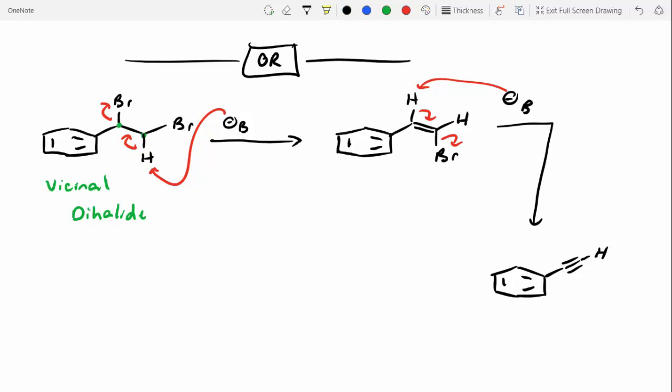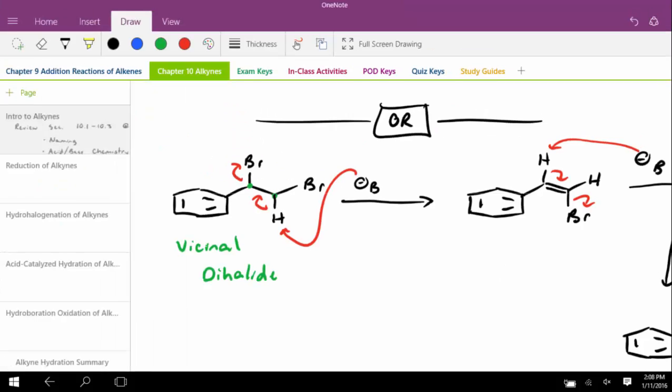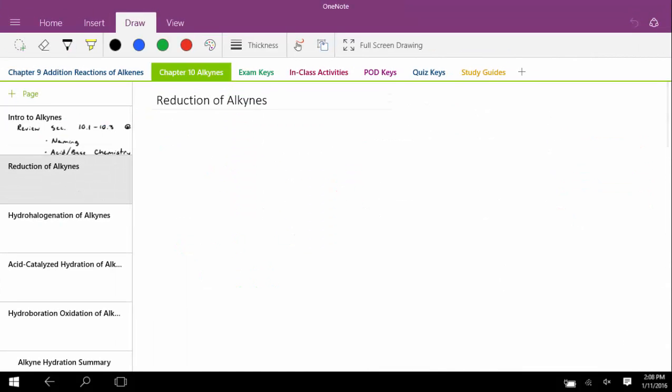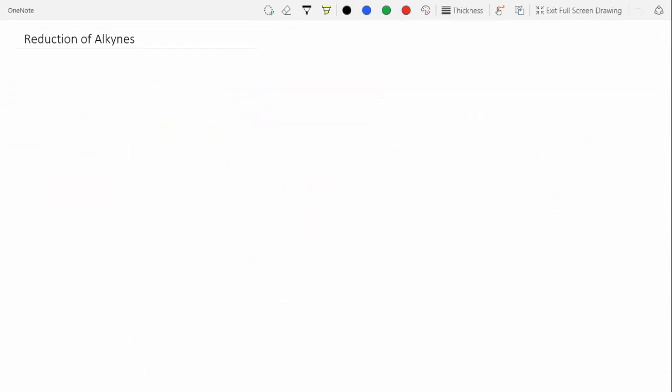Did you just rotate the Br and H right there? Yeah, it's important to remember that sigma bonds rotate freely in solution. So I didn't show any stereochemistry with this. But you should be grabbing anticoplanar beta protons. All right. So let's go on to a little bit of chemistry with alkynes.